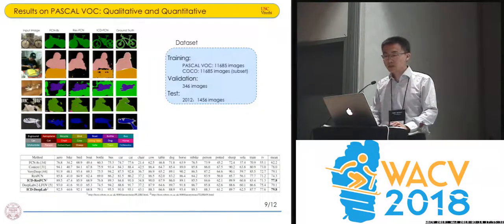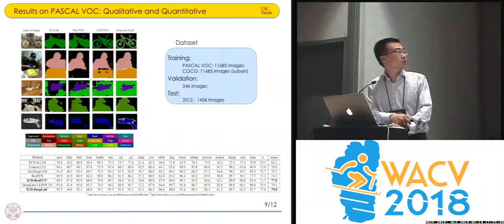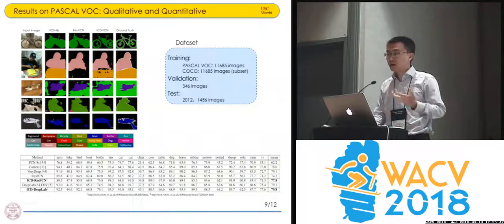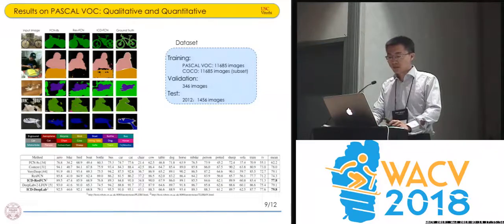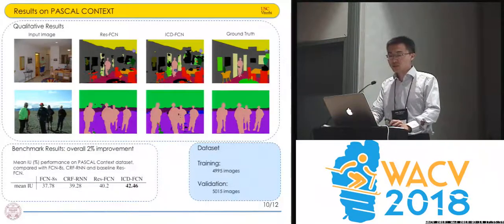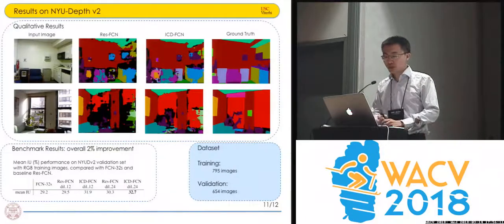There are results on Pascal VOC, both qualitative and quantitative. Our results show over three mean IOU improvement compared with the baseline approach. We also use a second baseline showing a 0.7 improvement compared with DeepLab version two. We also show results on Pascal Context, with an overall 2% improvement, and on MIU depths two, with 2% improvement.